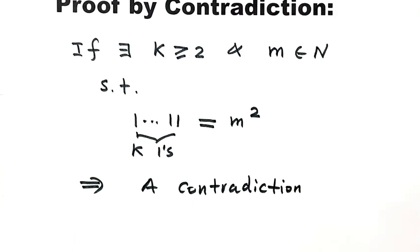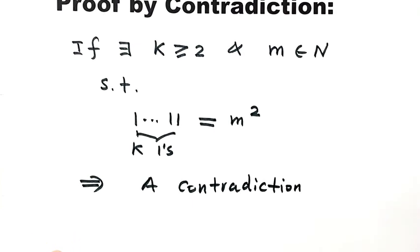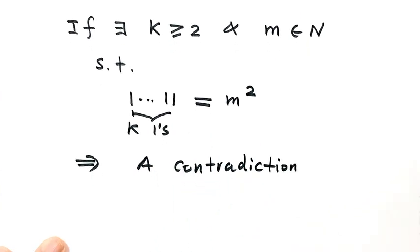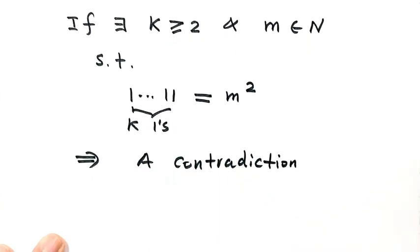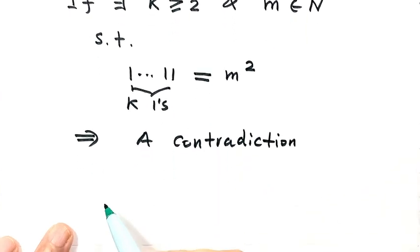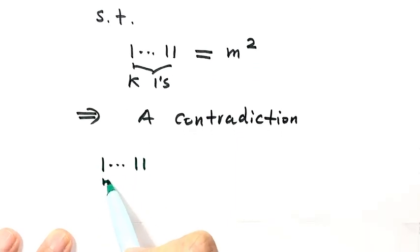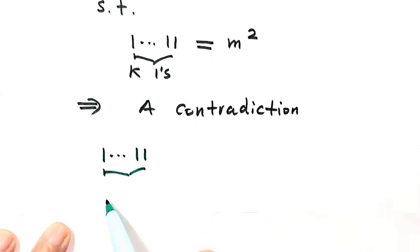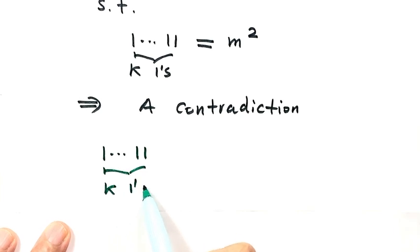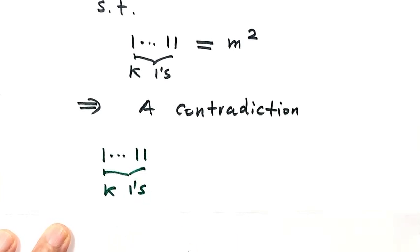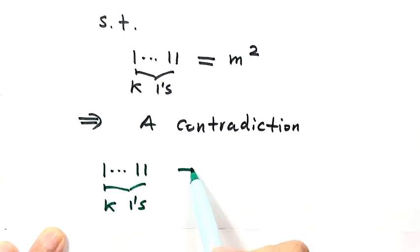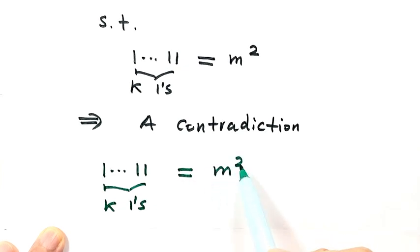Now let's get started. We start from this equation, assuming it is true. Here k is bigger than or equal to 2, and the number of k ones equals m squared, which is a perfect square.